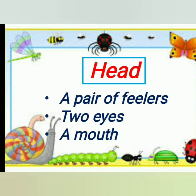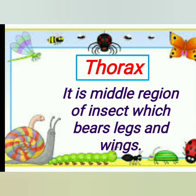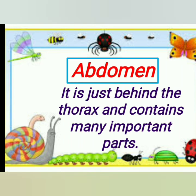They have two eyes to see around and a mouth to eat. Thorax is the middle region of the insect — the middle part of the insect's body is called the thorax. It bears legs and wings. Abdomen is just behind the thorax and it contains many important body parts.